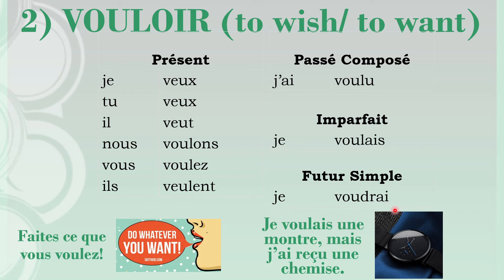Here are two sample sentences for vouloir. 'Faites ce que vous voulez' — do what you want, or do what you would like to do. 'Je voulais une montre mais j'ai reçu une chemise' — I wanted a watch but I received a shirt. Here vouloir is in the past tense. Vouloir will sometimes function as a normal verb and at other times as a modal verb.